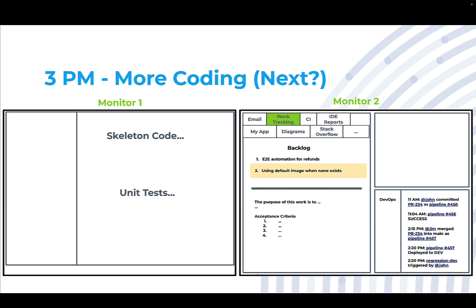And the first item has something to do with end-to-end automation. And dev2 says, this really looks like a QE task, so I'm going to skip over that to the next priority. In this case, it's something to do with using a default image when no image exists.